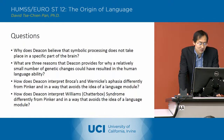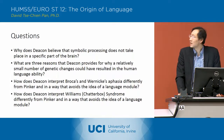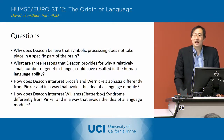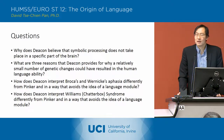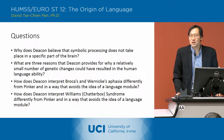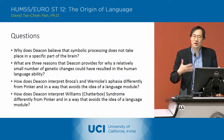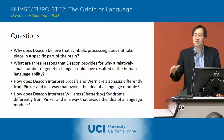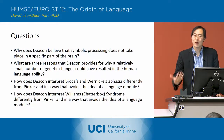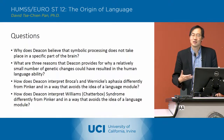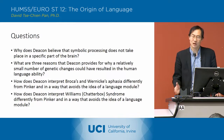How does Deacon interpret Williams' syndrome differently from Pinker, in a way that avoids the idea of a language module? He interprets it as a particular impairment of the links between sign-sign relationships and sign-to-object relationships. Within the brain, it's a problem of the linkage between the prefrontal cortex and the sensory motor areas, so that there's a problem with the indexical relationships — those patients are not able to construct indexical relationships well, even though they're able to do very well in constructing sign-to-sign relationships.